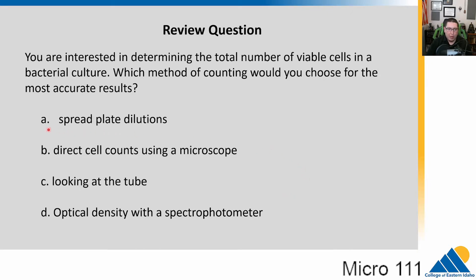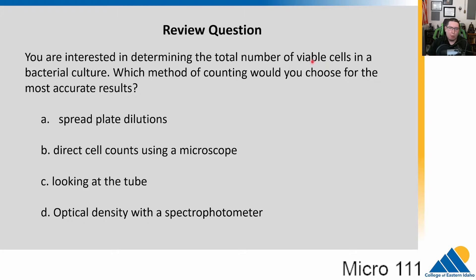The best answer would be A, and that's the only one because it's the only one using viable counts. Viable means able to reproduce and grow, and the spread plate dilutions are the only one looking at growth. You could directly count under a microscope, but without a live-dead stain, you couldn't tell the difference. Looking at how cloudy the tube is won't tell you live or dead — it's a very rough estimation. Optical density with a spectrophotometer gives a pretty accurate count, but not viable, because dead cells are included too.